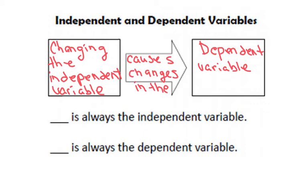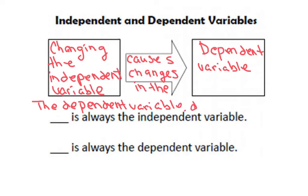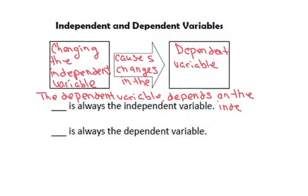There are some other ways that you can think about this relationship between the independent and dependent variable. You can think about it as: the independent causes the change in the dependent, like written up top. Or you can also think about it as: the dependent variable depends on the independent variable.